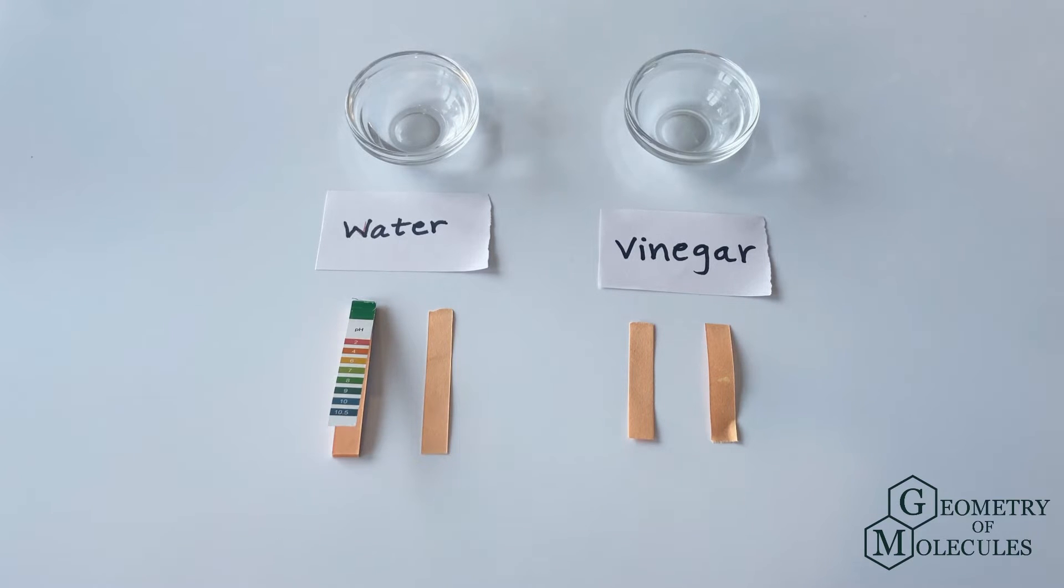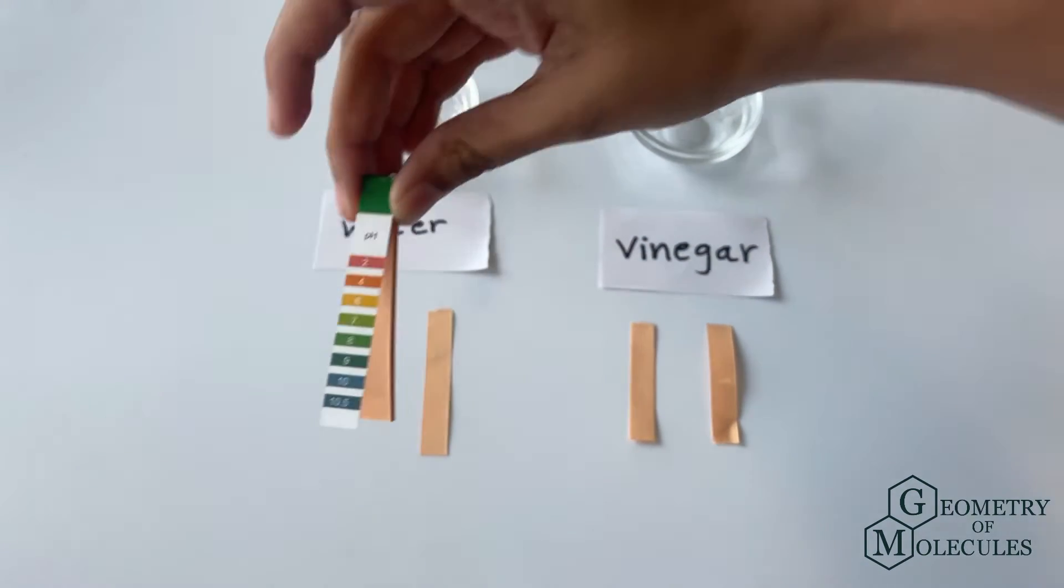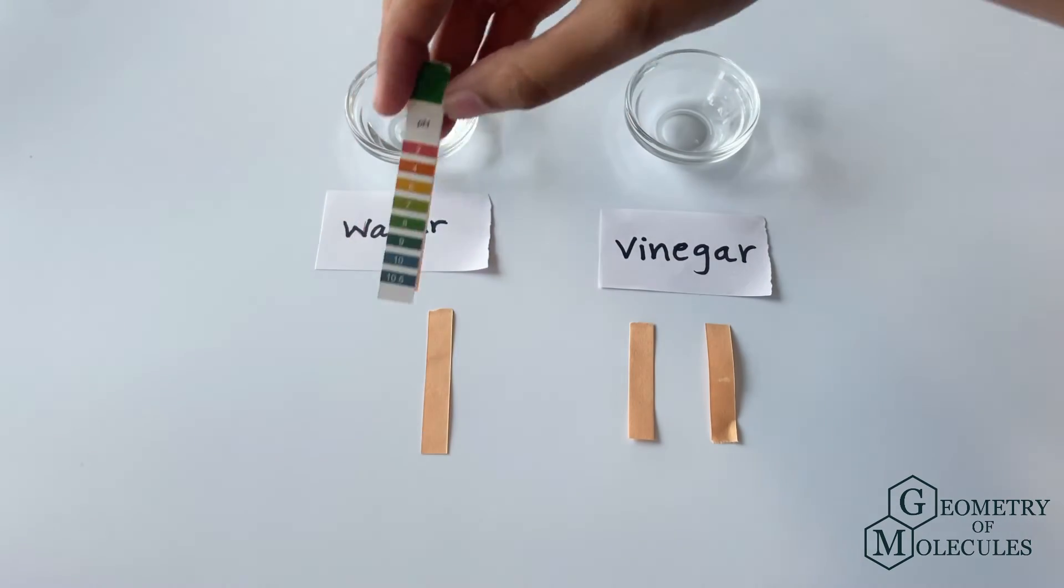But first, let us see what pH papers are and how to read the results. This is what a pH strip looks like, and based on the nature of our sample, the strip will change its color.